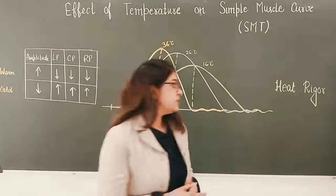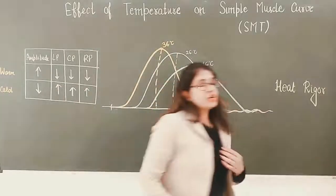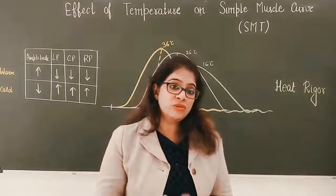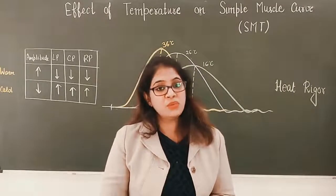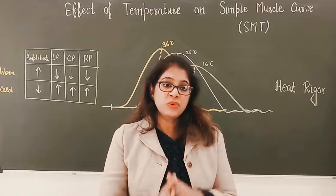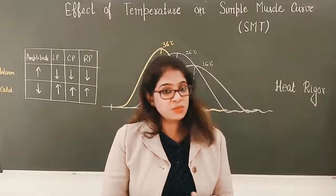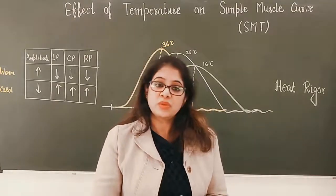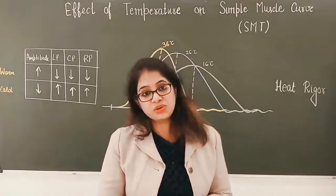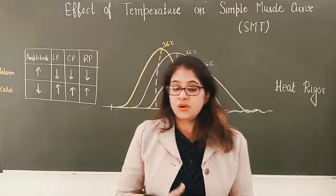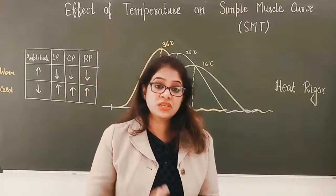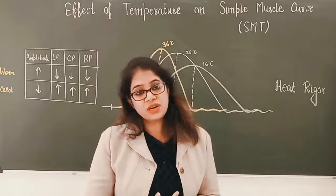Another term is heat rigor. In heat rigor, instead of warm saline, if we pour hot saline, the muscle protein gets denatured and destroyed. The muscle loses its property of contraction, so we are not able to study the properties of muscles. This condition is called heat rigor.